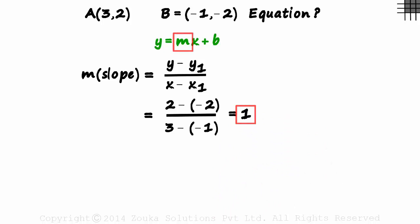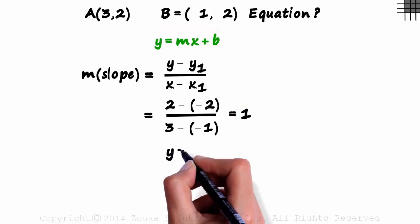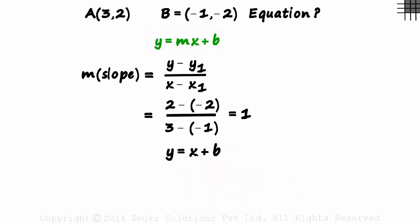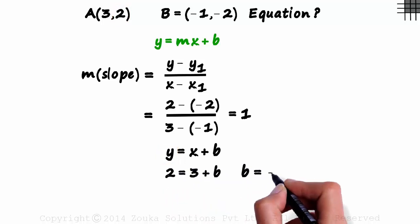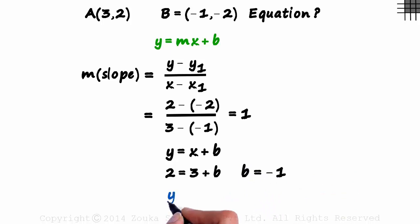We have M and we need to find B. It's easy. If the slope is one, this can be written as Y is equal to X plus B. To get B, just substitute one of these values here as both points lie on the line. If we substitute three in place of X and two in place of Y, we get two is equal to three plus B. The value of B is minus one. Y is equal to X minus one is the equation of the line that passes through A and B.